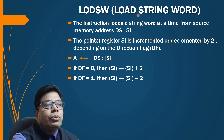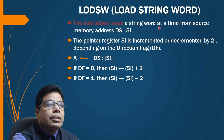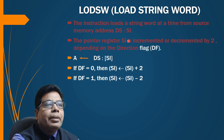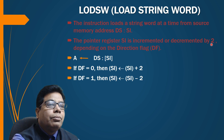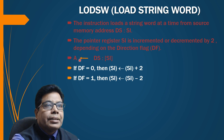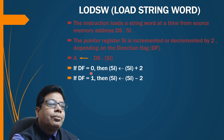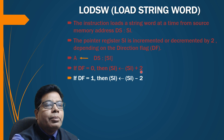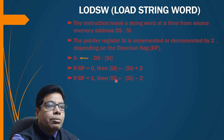LODSW — load string word — loads a string word at a time from source memory address DS:SI into the AX register. The pointer register SI is incremented or decremented by two depending on the direction flag. If DF=0, SI is incremented by two; if DF=1, SI is decremented by two.